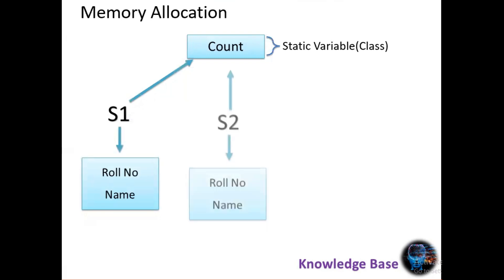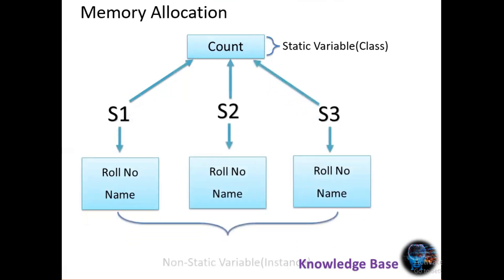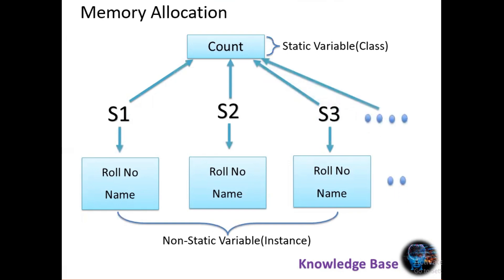Looking at memory allocation, the 'count' variable is common for all instances — s1, s2, and s3. But 'rollNumber' and 'name' are non-static or instance variables, so each instance has its own copy. Similarly, if we declare more instances, all of them share the 'count' variable commonly, while 'rollNumber' and 'name' each have their own copy.